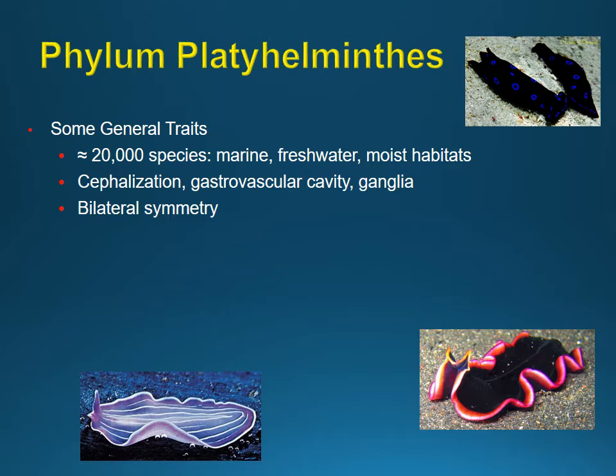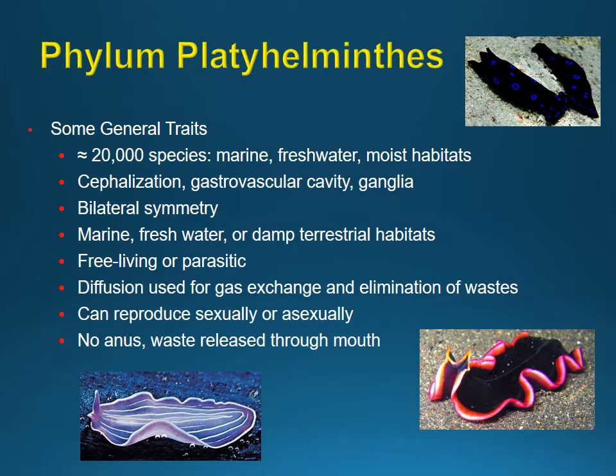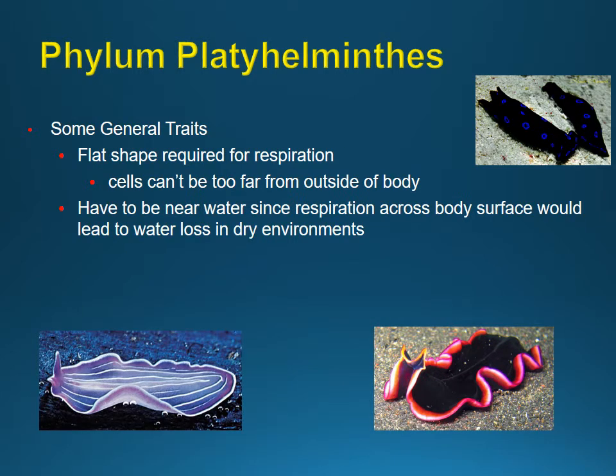They only have one true opening - the mouth of that blind gut serves as both mouth and anus, so they eat and poop in the same hole. They can reproduce sexually and asexually. Some of these can be parasitic in this group. If you're sketching this up, they have mesenchyme - that's in between the skin and the gut - and this is the tissue that can become different types of tissues.